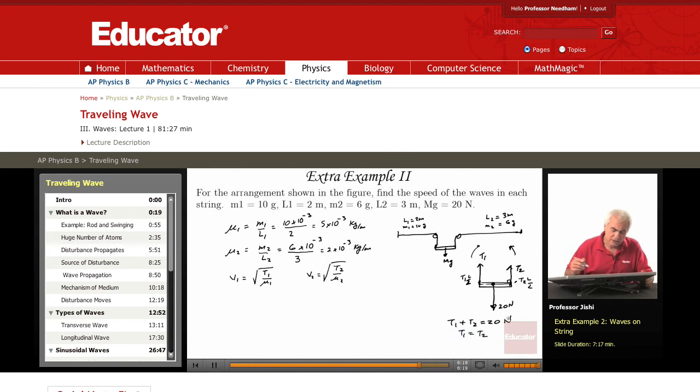T1 is 10 newtons. So this is square root of 10 divided by μ1, which is 5 times 10 to the minus 3. So this is 10,000, that is 10 to the 4 over 5, which is 10 to the 4. We take it outside the square root, it's 100, so it's 100 over root 5 meters per second.